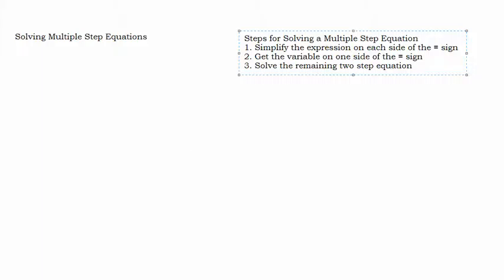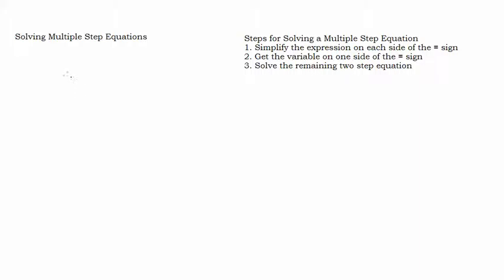In this video, we're going to look at solving a multiple-step equation, and this one's going to be a little challenging because it's going to have everybody's favorite fractions. So let's get this written down: negative one-fourth times the quantity x minus 8, plus one-half times the quantity x plus 2, equals x minus 9.